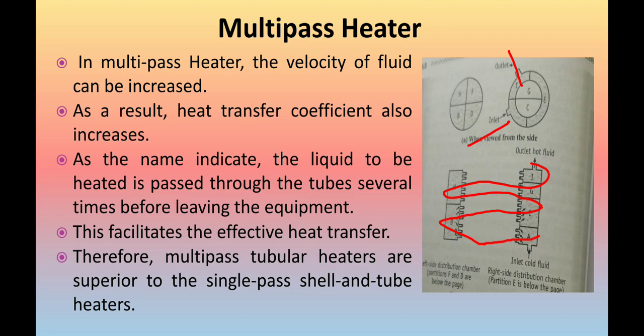The fluid to be heated is pumped at high velocity into the right distribution chamber, to compartment A — you can see here the inlet for cold fluid. High velocity facilitates effective heat transfer. The fluid is directed to enter only a fraction of the tubes by means of baffles placed in the distribution chamber. The liquid enters compartment A, flows to the left into compartment B, back to the right to the next compartment, and so on in alphabetical sequence.